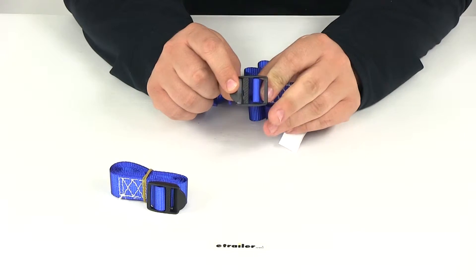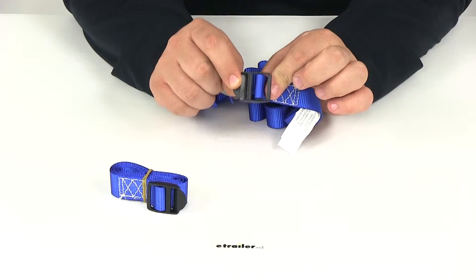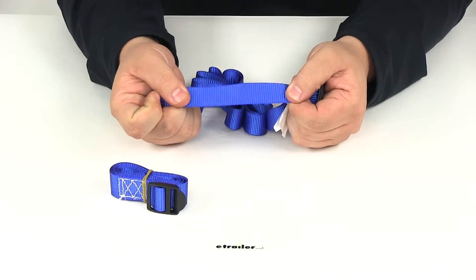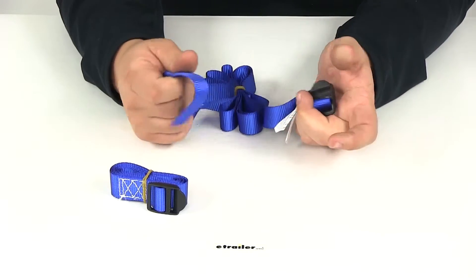The buckles are going to be made from a polycarbonate material so they're going to resist cracking and breaking. The strap is a nice blue color, very durable. It's got polyester webbing, again one inch wide by six feet long.